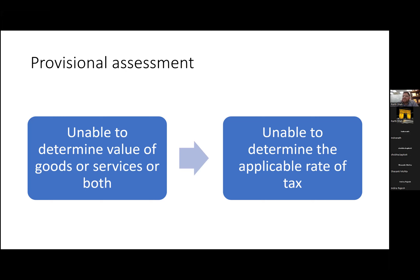You can apply for provisional assessment only in two scenarios: valuation issues, or inability to determine the correct applicable rate. You cannot go for provisional assessment for questions like the correct place of supply. Under provisional assessment, if you ascertain a liability of Rs. 100 but the final assessment order says Rs. 80, you will be entitled to claim a refund of Rs. 20 via RFD-01. Conversely, if the assessment order says Rs. 150, you have to pay Rs. 50 along with interest to the government.